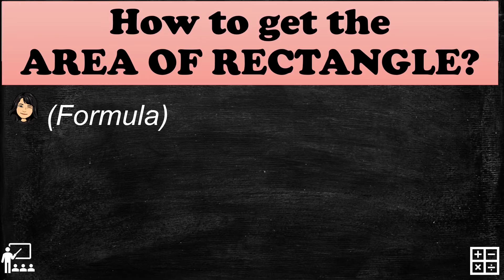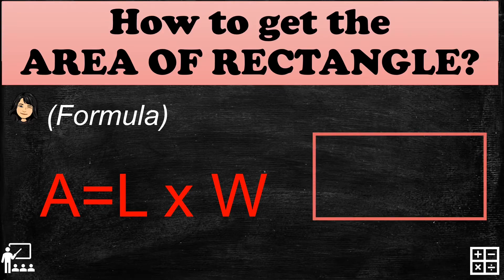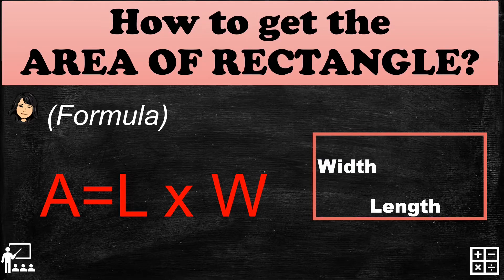The formula for getting the area of a rectangle is A equals L times W. In a rectangle, L is the length or the longest side, and W is the shortest side of the rectangle.